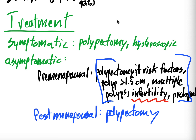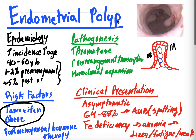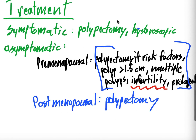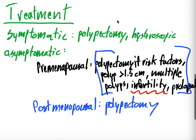So that's probably good enough for now. Endometrial polyps — we covered epidemiology, risk factors, pathogenesis, clinical presentation, diagnosis, and treatment. Check out the video on abnormal uterine bleeding for more background on this topic. Thank you for watching. Please leave some comments, questions, and concerns, let us know what you think, subscribe, hit the bell, and have a great day. Bye-bye.